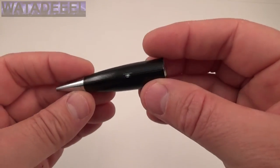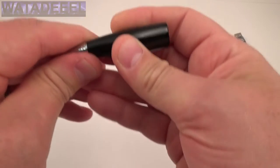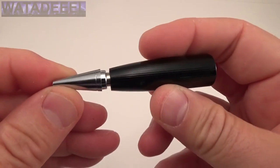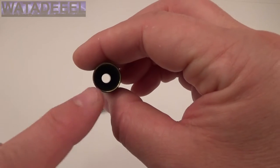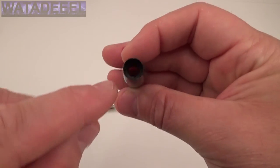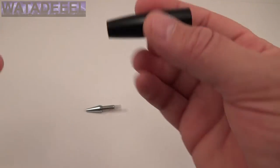So if you grab the end of the pen right here and you start pulling out, it'll start coming apart like that. It's being held in by a rubber grommet which you can see kind of inside there.